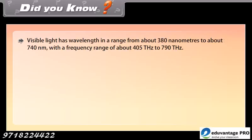Did you know? Visible light has wavelength in a range from about 380 nanometers to about 740 nanometers, with a frequency range of about 405 terahertz to 790 terahertz.